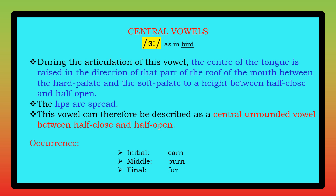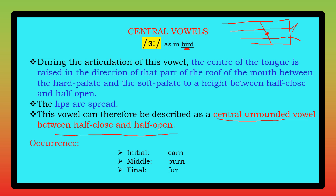The next sound is the long /ɜː/ sound, as in 'bird.' During the articulation of this vowel, the center of the tongue is raised in the direction of the path of the roof of the mouth between the hard palate and the soft palate, to a height between half close and half open position. Lips are spread. This is classified as a central unrounded vowel between half close and half open position.